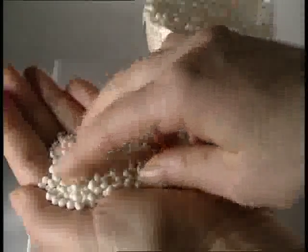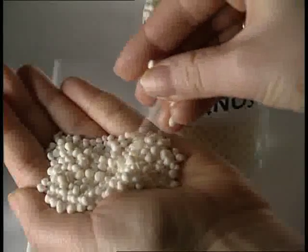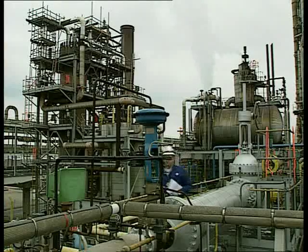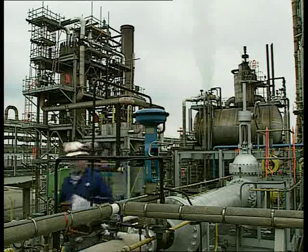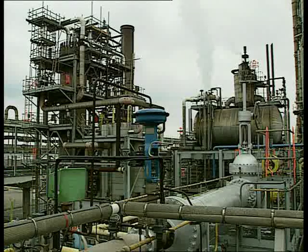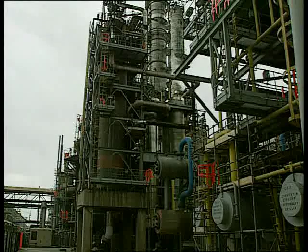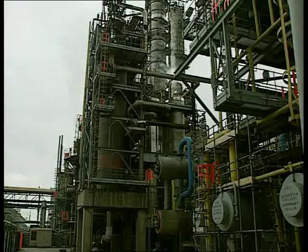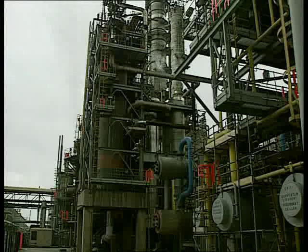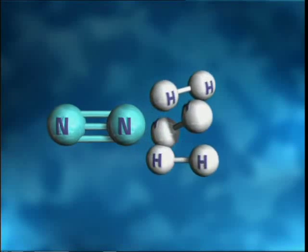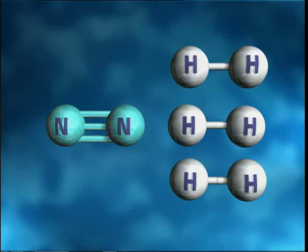The starting materials are ammonia gas and nitric acid. Ammonia is made industrially from nitrogen and hydrogen. The two gases are mixed in a pressurized container. This is the equation for the reaction. Each nitrogen molecule reacts with three hydrogen molecules to form two molecules of ammonia.